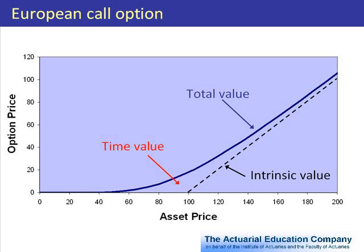For asset prices above 100, the intrinsic value line goes up at 45 degrees. The time value is the gap between the solid blue line and the dotted black line, and shows the extra value from not having to decide now whether we buy the asset or not — we've got until the expiry date and then we choose. For very low asset prices, our option is out of the money, so there's very little chance of wanting to exercise in the future, and therefore time value is very low.